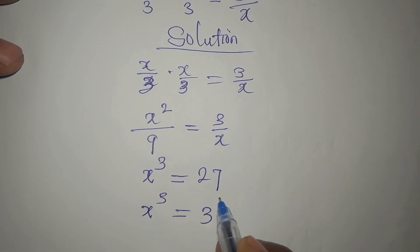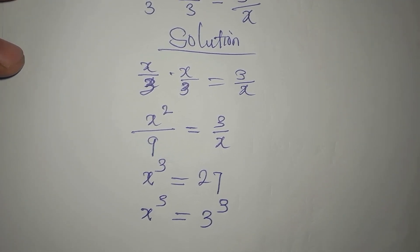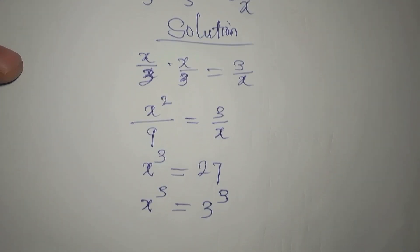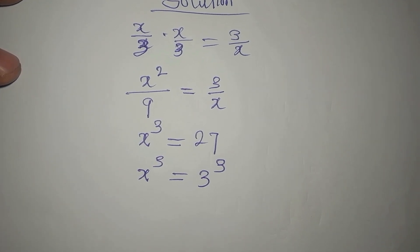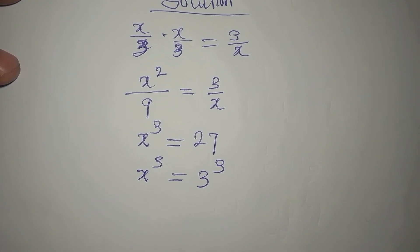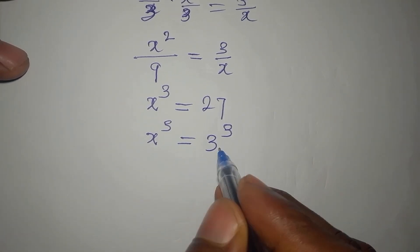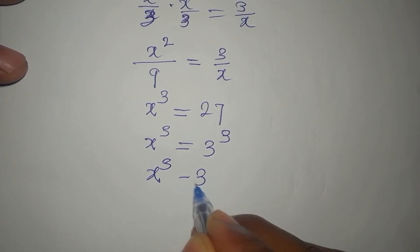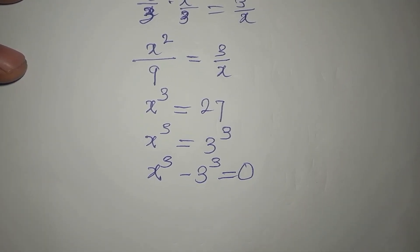Which is the same as 3 to the power of 3. If you equate the base, if you equate the powers, the bases will be equal. But then if we do that, we'll have just one solution, and this equation is expected to give us 3 solutions. So I'm going to bring this to the left: x to the power of 3 minus 3 to the power of 3 is now equal to 0.